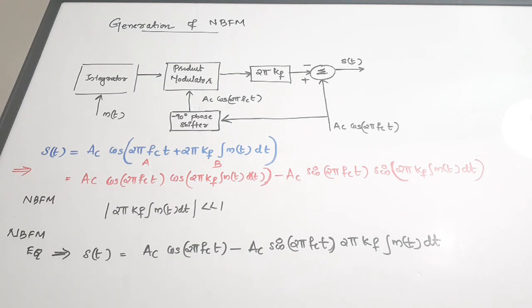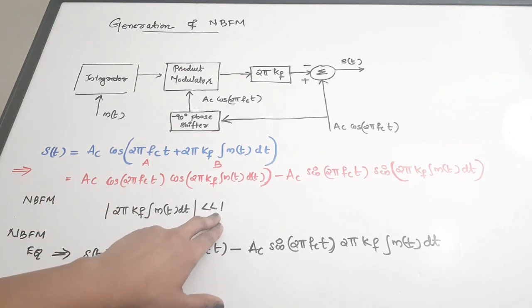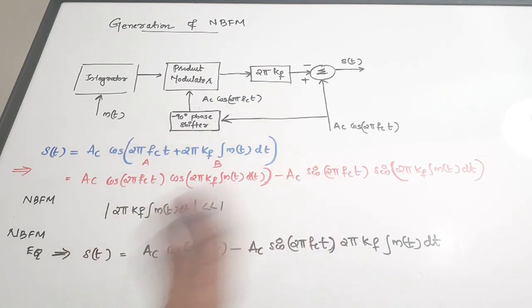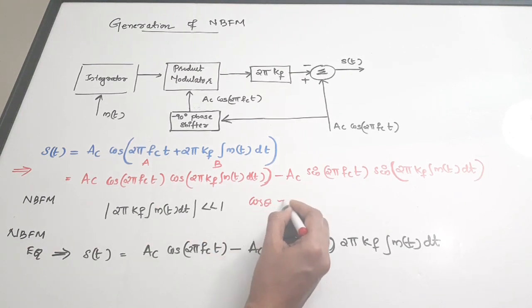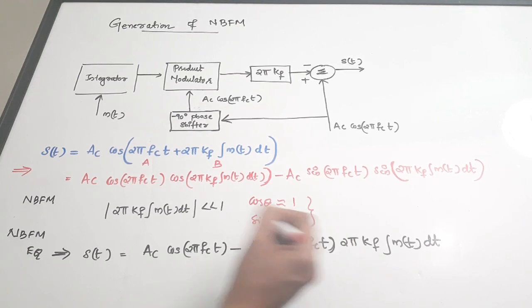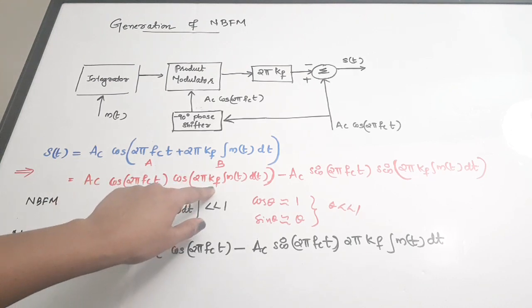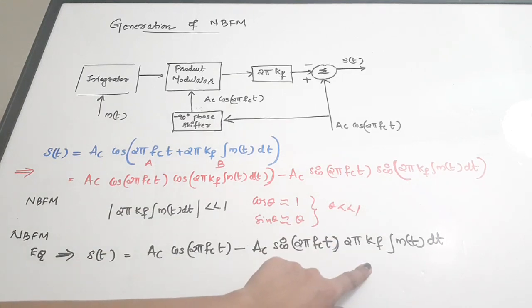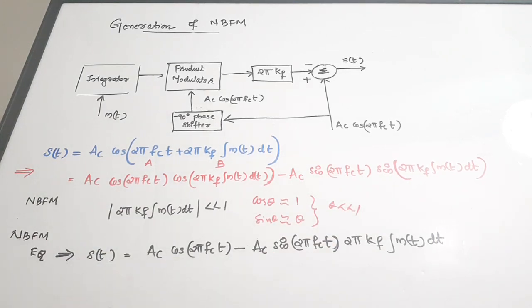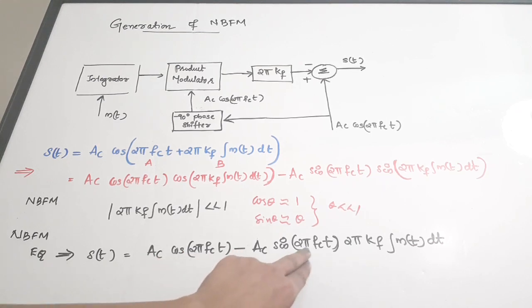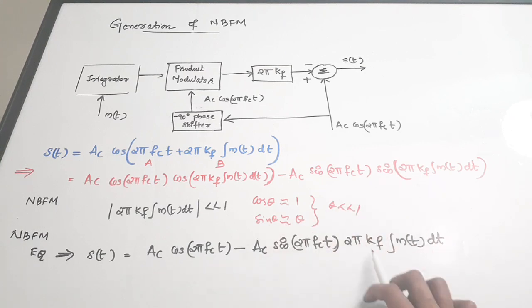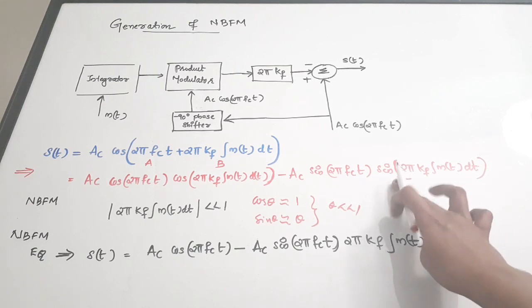For narrow band FM, we know that |2π kf ∫m(t)dt| is very much less than 1. Since this appears as an angle to cos and sin, we apply small angle approximations: cos θ ≈ 1 and sin θ ≈ θ when θ is very small. Substituting these approximations, the cos term becomes 1 and vanishes, while the sin term is replaced by its angle value. This gives the final narrow band FM equation: ac cos(2π fc t) − ac sin(2π fc t) · 2π kf ∫m(t)dt.